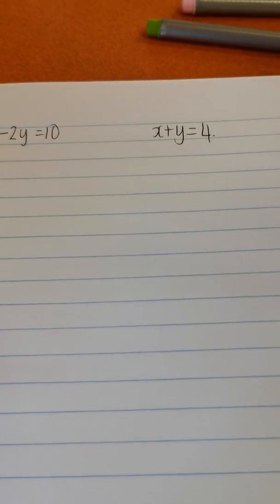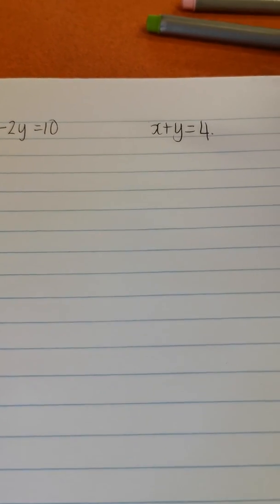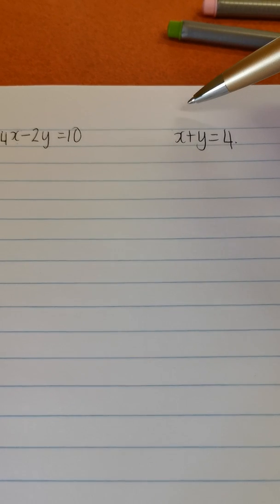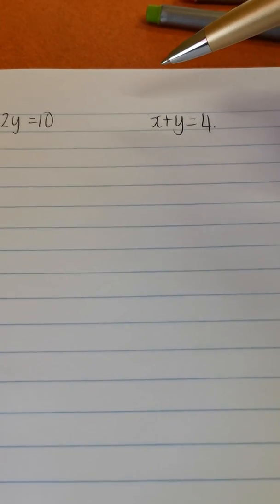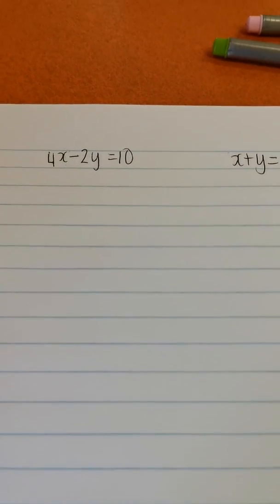So always try and look for one that has a coefficient of 1 or else it has a coefficient of 1 and a power of 1. If it doesn't, if all of them have coefficients, then it's fine, you can pick whichever one you want. But as a general rule, try and pick the one that doesn't have anything in front of it.